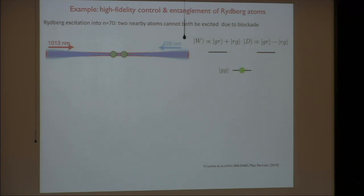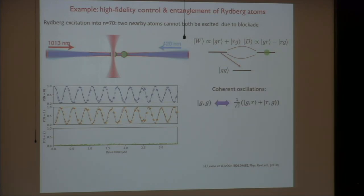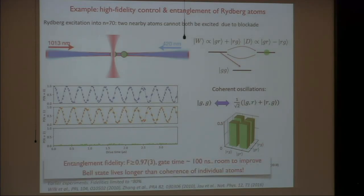Here is one example where we try to prepare a Bell state of two proximal atoms. What you do is excite them simultaneously, and because of the blockade, you can only create one excitation. If the phases of these lasers are well-defined, you will just create one superposition of these two states. You can check the number of doubly excited atoms, and what you see is basically consistent with noise. To prove entanglement, you have to measure the parity of this excitation. The way to do it is to basically apply the laser beam to one of the atoms, which will shift the energy levels and cause precession between one Bell state and another. By then measuring the parity, you can fully characterize the state. The fidelity of the state which we measured about a year ago was about 97%.